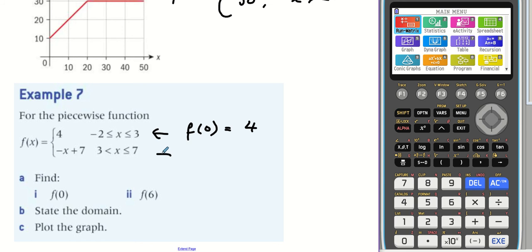f of six, however, would be using this function because our x is between three and seven. So we then have to put this into the function. So we would have minus six plus seven. So f of six would equal one.